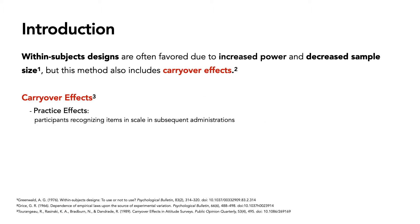In psychological research and other substantive fields, there are often within-subjects designs and between-subjects designs. In within-subjects designs, each participant is in every experimental condition — we don't split people off into different conditions, they go through all of them. This leads to an increase in statistical power and decreased sample size, because they're going through every condition rather than having different people do different conditions.